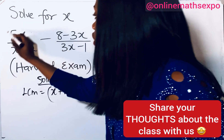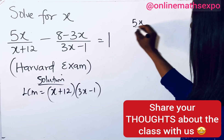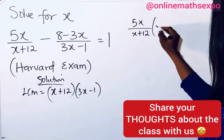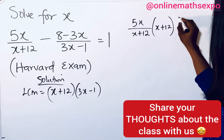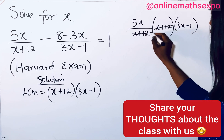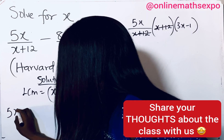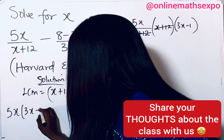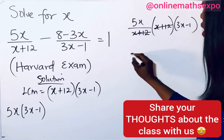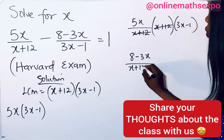So we have 5 over (x + 12), and we multiply it by the LCM. You notice that (x + 12) in the denominator and the LCM cancel out, leaving 5 multiplied by (3x − 1). Then we also multiply the second term — which is (8 − 3x) over (3x − 1) — by the LCM.